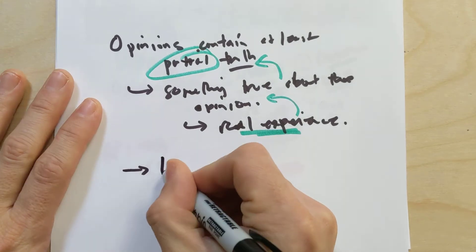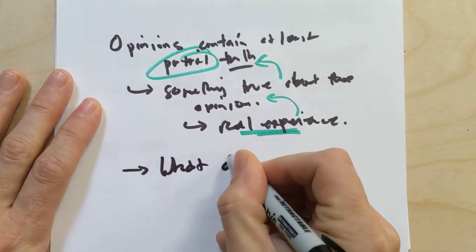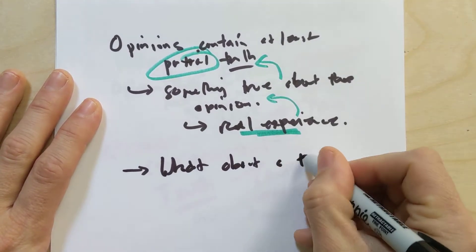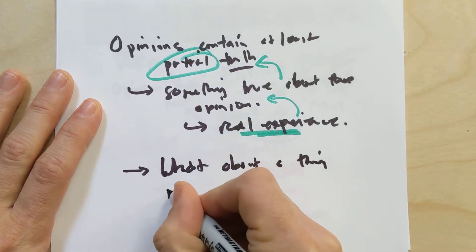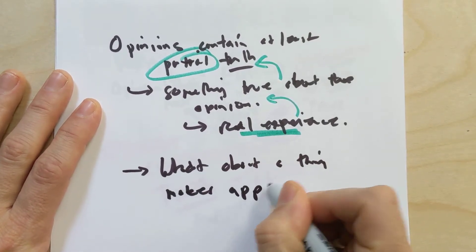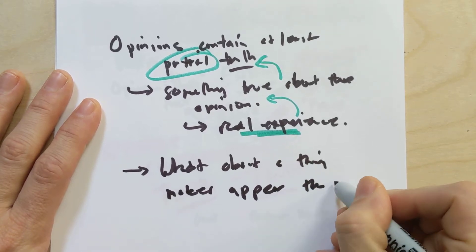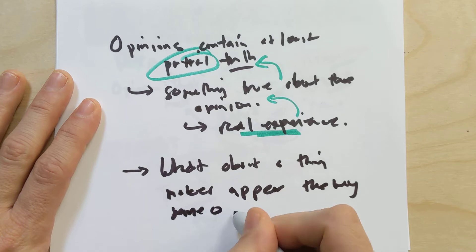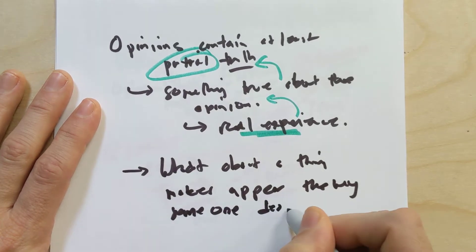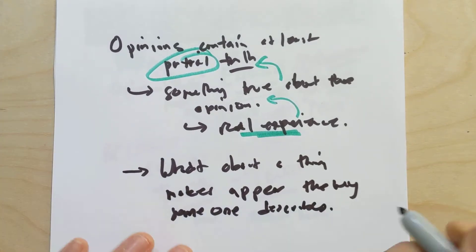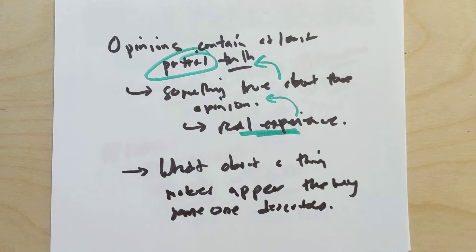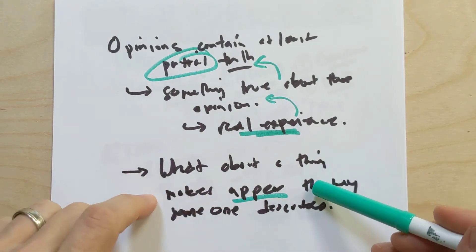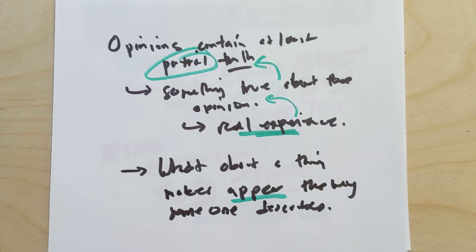We ask ourselves, what about the thing makes it appear the way someone describes? When someone talks about a restaurant that they really like, you might wonder, why is it that it appears that way to them? What's the truth about the thing that shows up and causes it to appear that way?